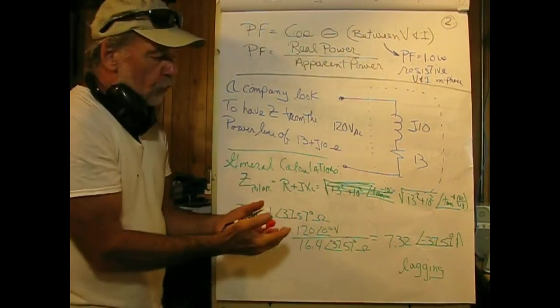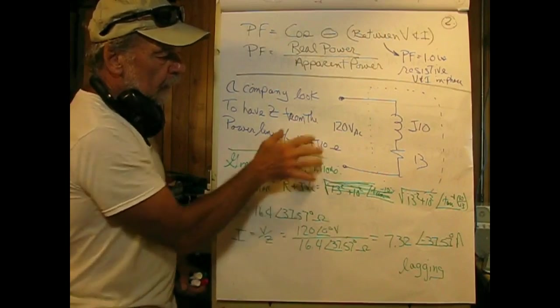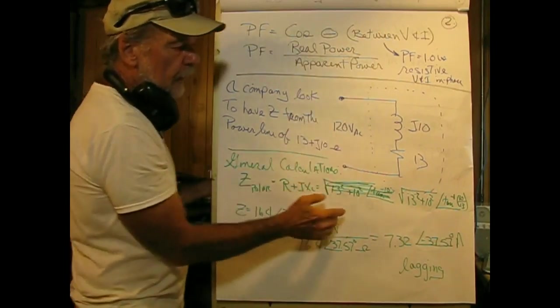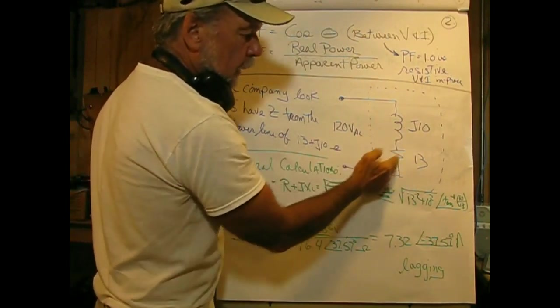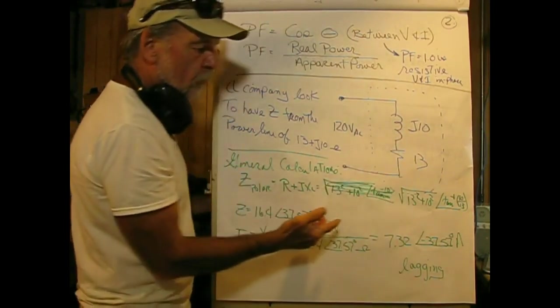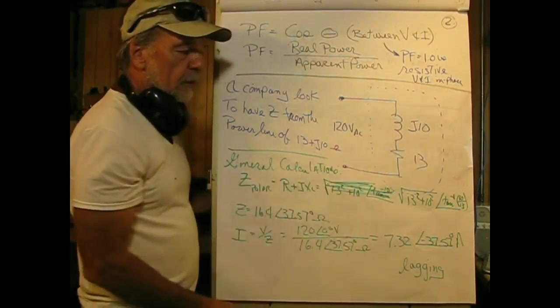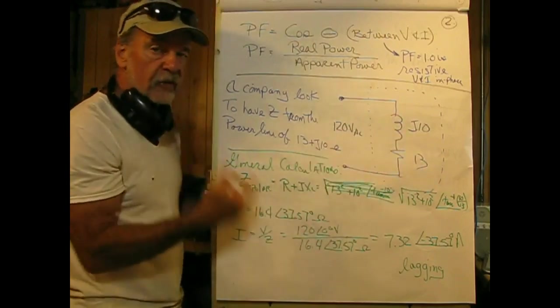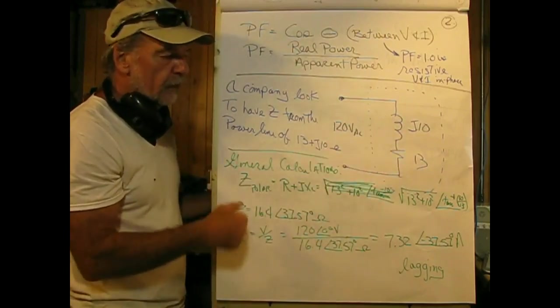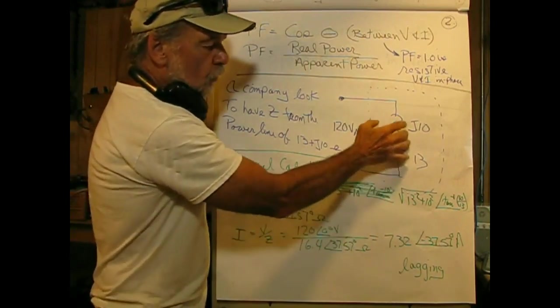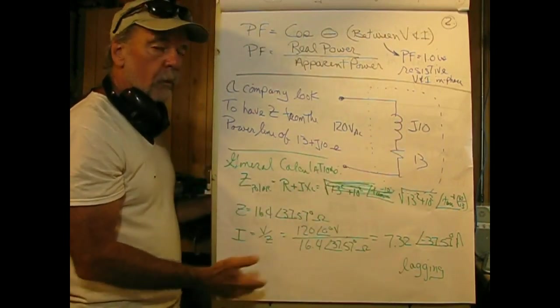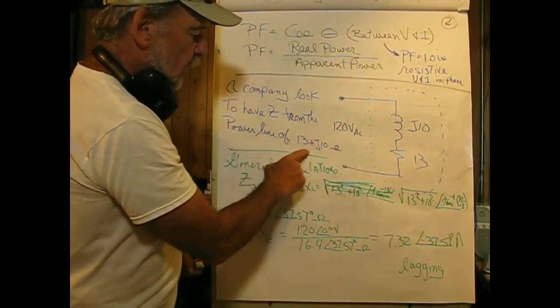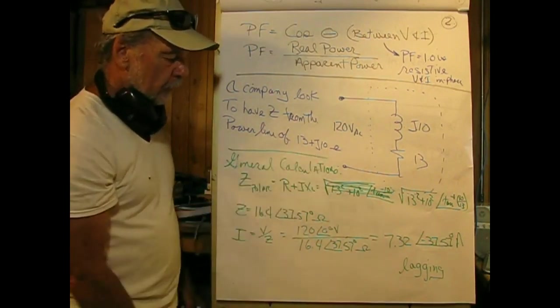Let's suppose we have a machine shop, and looking from their electric meter, we see that they have a J10 inductive component and a 13-ohm resistive component. These are unrealistic because they're extremely high, but they represent everything in that shop. These numbers are just easier to work with. In rectangular form, it's 13 plus J10.